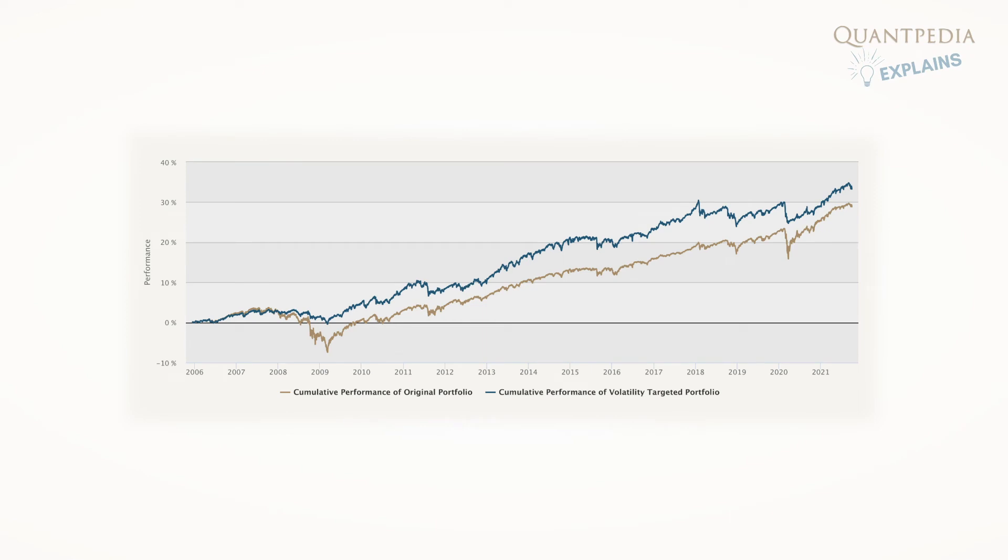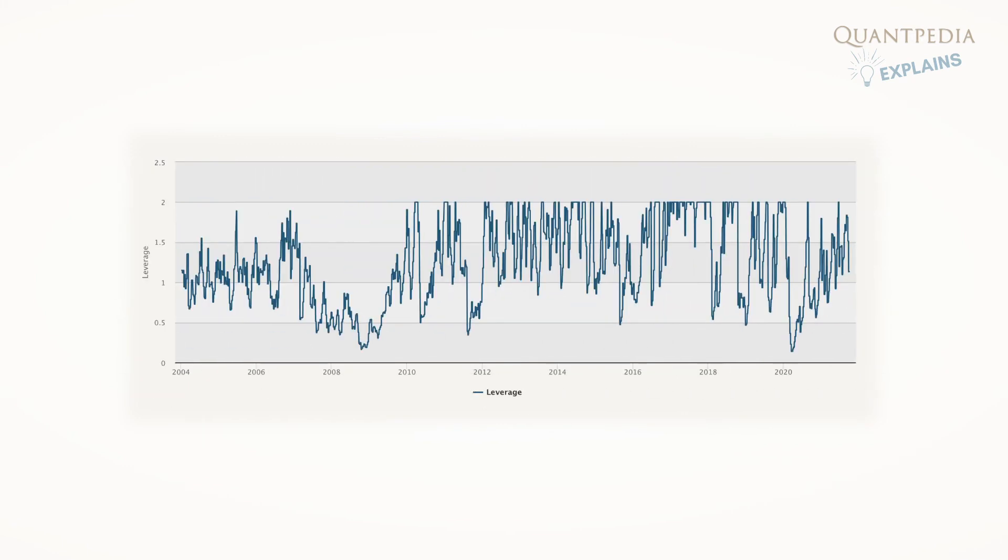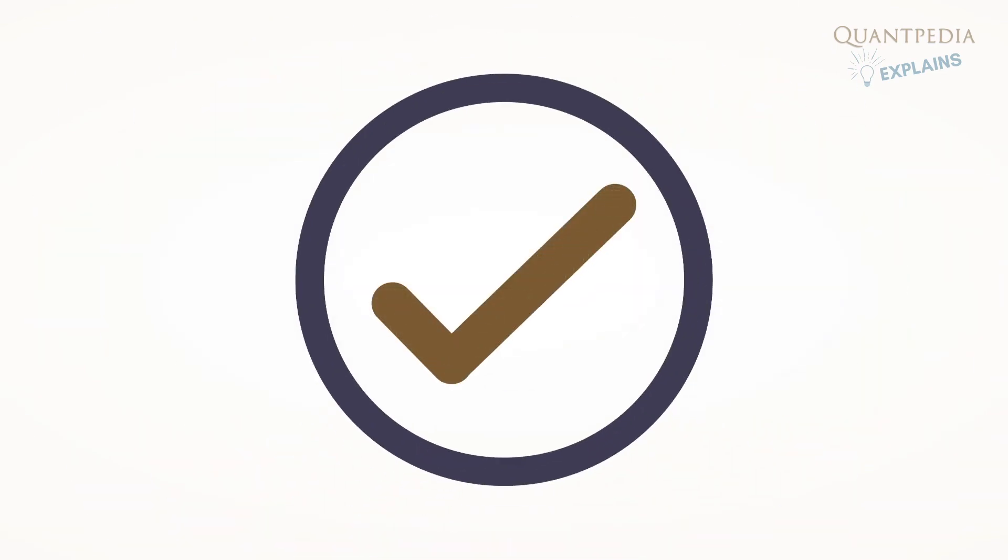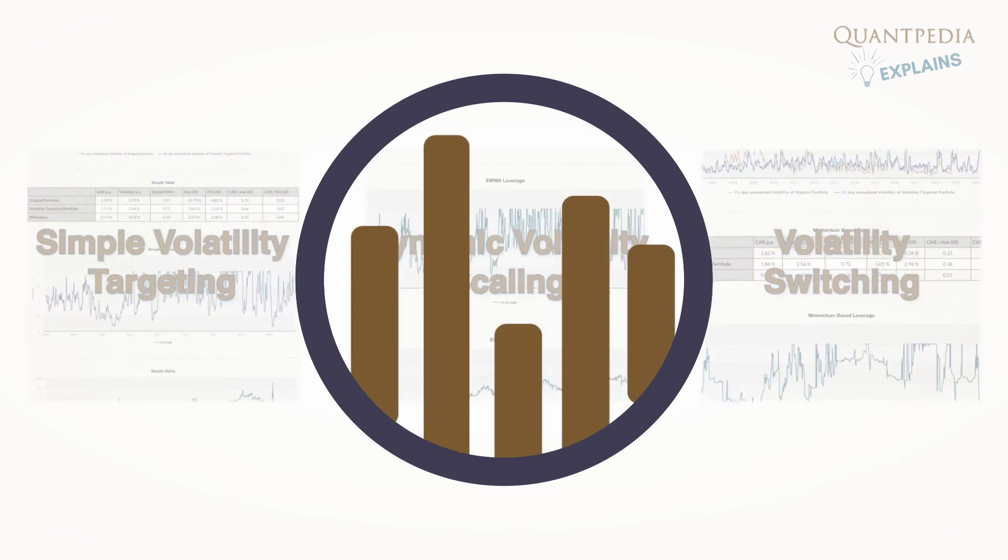Users can compare benchmark portfolio performance to volatility-targeted portfolios and inspect charts displaying historical and targeted portfolio volatility plus employed leverage over time. This allows evaluating whether it's advantageous to use the volatility targeting technique as an overlay for a model multi-asset multi-factor portfolio.